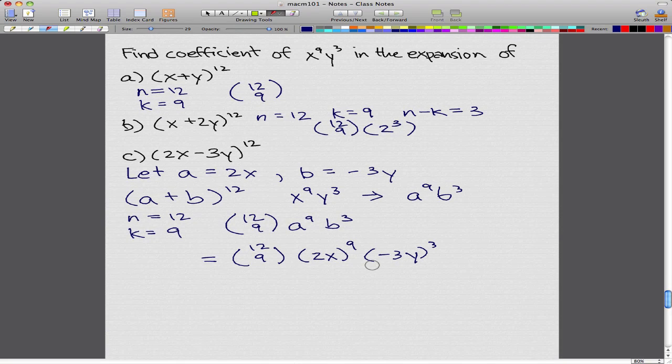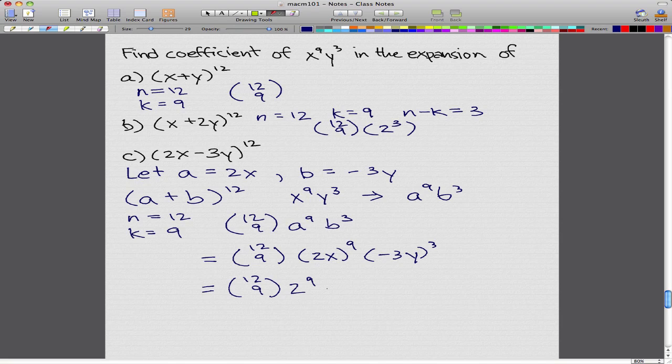So what we can do now is take out these 2^9 and (-3)^3 to get 12 choose 9, times 2^9, times (-3)^3,